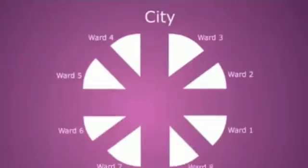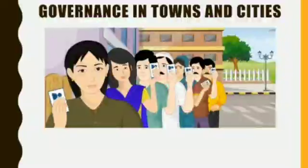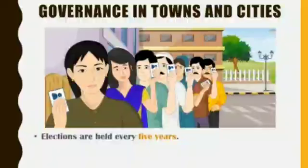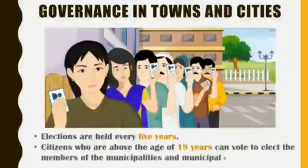For the purposes of election, the city is divided into small wards. Towns and cities are divided into wards according to their population. One member is elected from each ward. Elections are held every 5 years. Citizens who are above the age of 18 years can vote to elect the members of the municipalities and municipal corporations.